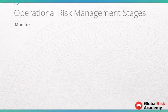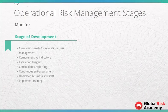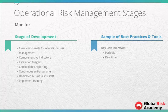In the Monitor Development stage, we aim to achieve clear vision and goals for operational risk management, comprehensive indicators, escalation triggers, consolidated reporting, continuous self-assessment, dedicated business line staff, and implement training. Sample key risk indicators at this stage could be periodic and real-time.